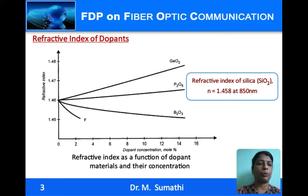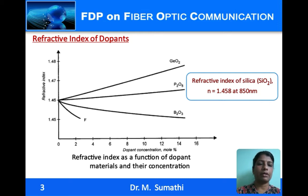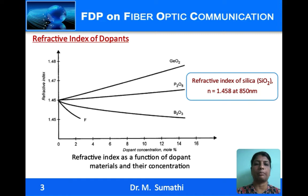Some popular dopants used are indicated here, along with the refractive indices for various concentrations. Germanium dioxide (GeO₂) and phosphorus pentoxide (P₂O₅) increase the refractive index above that of pure silica. Boron trioxide (B₂O₃) and fluorine decrease the refractive index below that of pure silica. Depending on whether the dopant is added for the core or the cladding, the material and its concentration can be chosen accordingly.